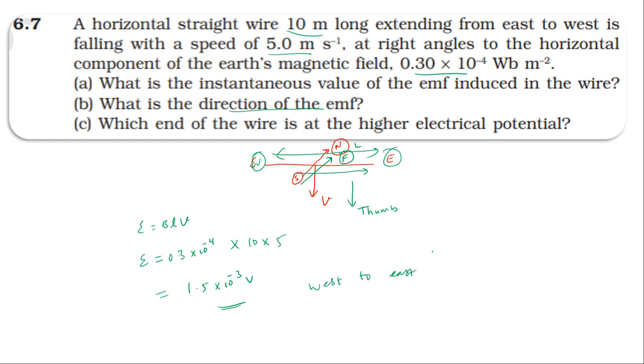To understand the higher potential, think about current flowing. If we connect this to a resistance, current will flow from the source through the circuit.